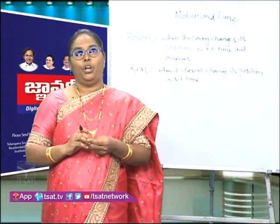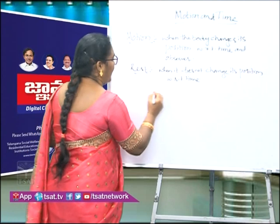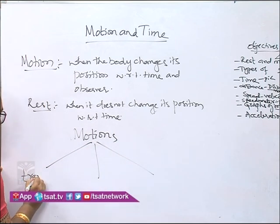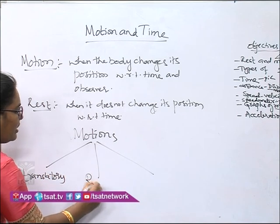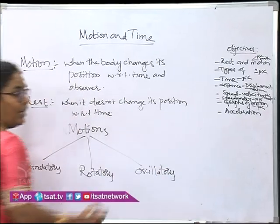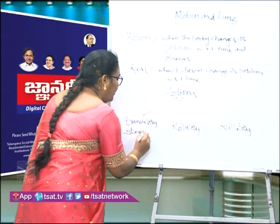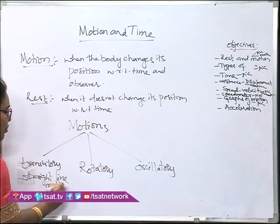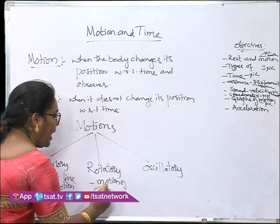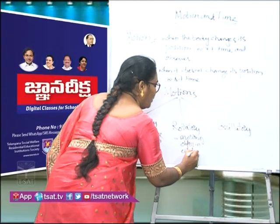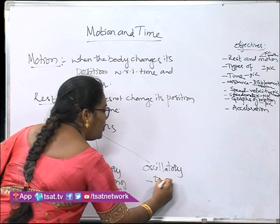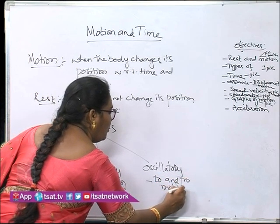There are three types of motion. One is translatory motion. Second is rotatory motion. Translatory motion is a straight line motion. Rotatory motion is the motion of an object in a circular path. It is called rotatory motion. And oscillatory motion is the to-and-fro motion of a body.